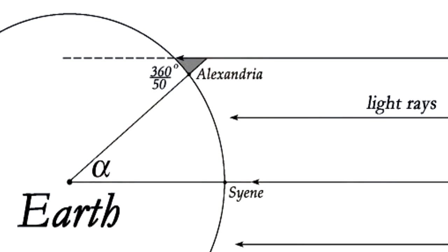After reaching this conclusion, Eratosthenes then famously factored the length of the two shadows with his assumed distance to the sun, and recorded a measurement of the globe-earth circumference close to what heliocentrist astronomers still use today.